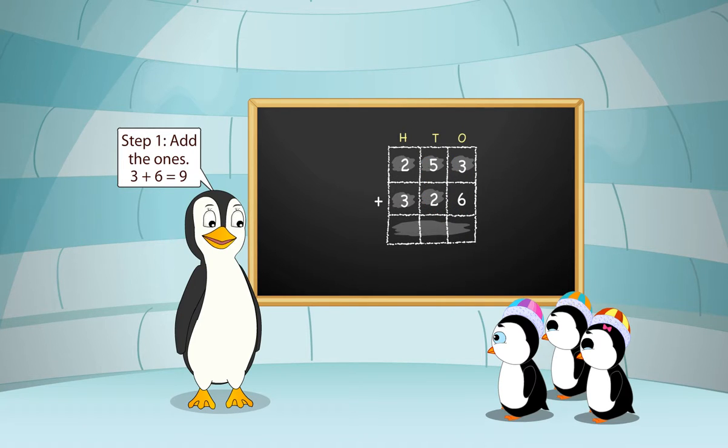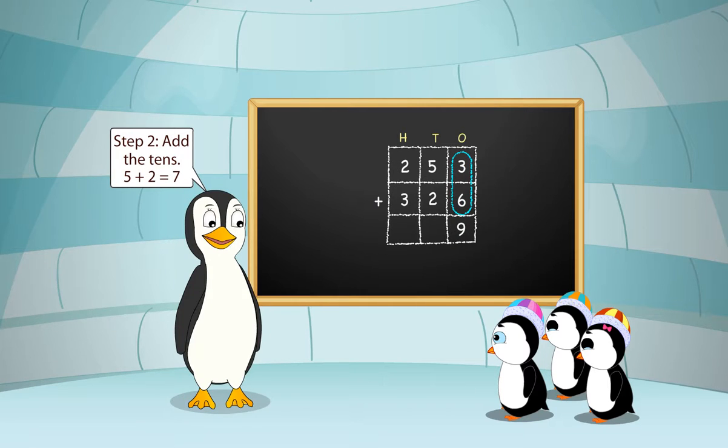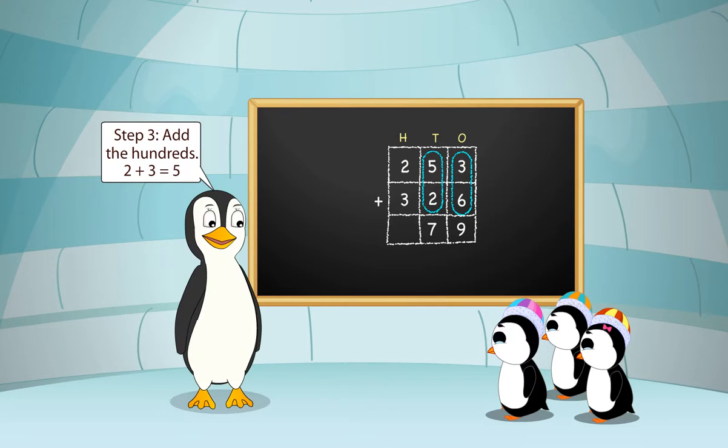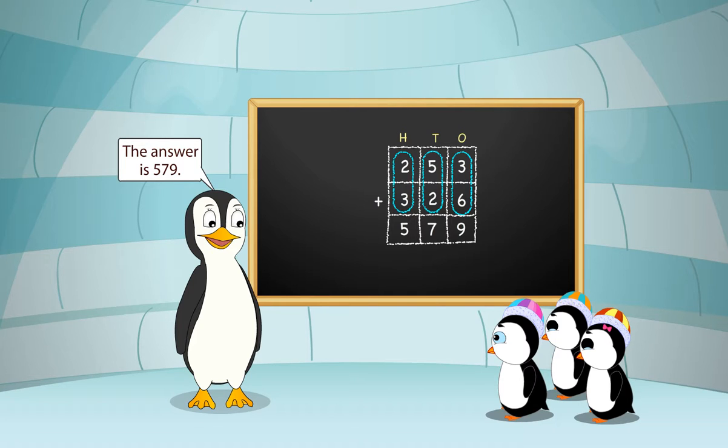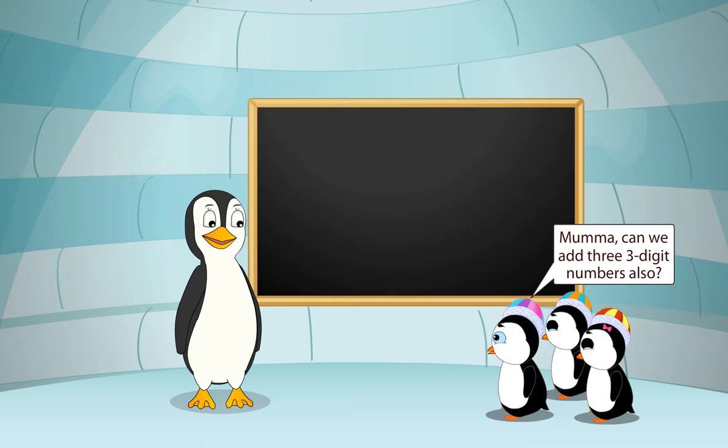Step 1. Add the ones. 3 plus 6 is equal to 9. Step 2. Add the tens. 5 plus 2 is equal to 7. Step 3. Add the hundreds. 2 plus 3 is equal to 5. The answer is 579.